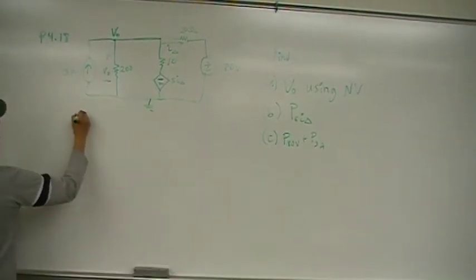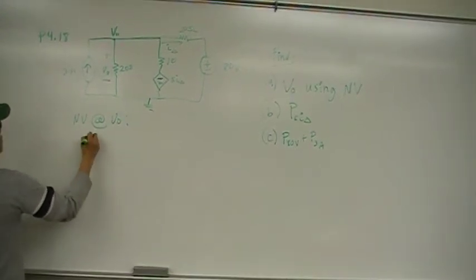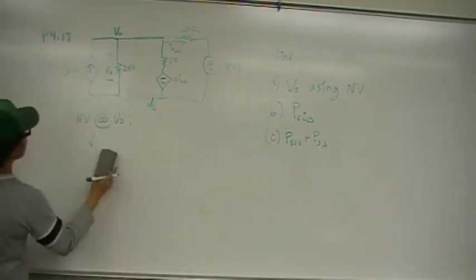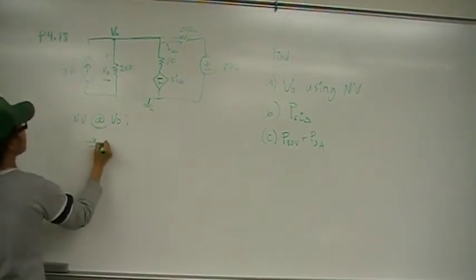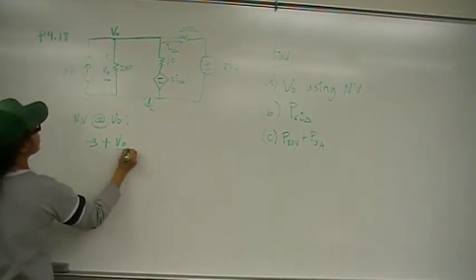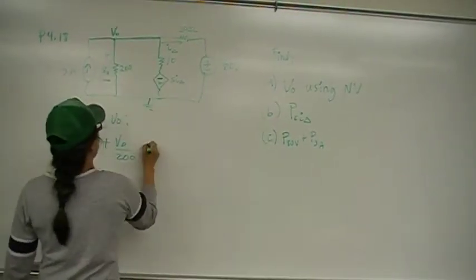So we can start to write our node voltage equation right there at V out. So node voltage at V out, we're going to go V out. We have three amps going into the node, so that's going to be negative three, plus V out over 200.